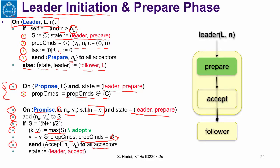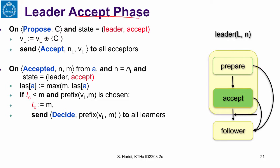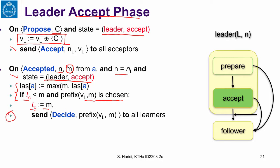We send all of these to all acceptors as usual and move to the accept phase. At this point the proposer, which is the leader, is in sync with the majority of acceptors. Now in the accept phase, if the leader gets a new proposal, it augments its sequence with that command and sends the new extended sequence to all acceptors. When it gets an accepted message from acceptors with the length of the accepted sequence, it checks whether a sequence now has support by a majority. If that majority-supported sequence is longer than the longest chosen sequence, we can decide on it by sending the prefix of VL of length M to all learners.